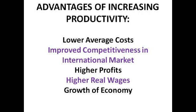There are lots of advantages to a firm of increasing their productivity. One of them is lower average costs. This is because workers are making more in the same period of time, and because wages are a fixed cost, the cost per unit produced is lower. If you share the cost over all the increased number of units being produced, it's less than when fewer were being produced and productivity was lower.